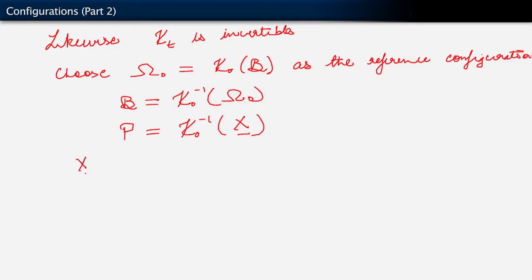So X is the reference position or the reference placement of particle p. Let's suppose that this is our reference configuration, omega naught. The region occupied in space right here is our reference configuration. And for this particle p here, this point where my fingers are pinched together is its reference position, relative to this basis.